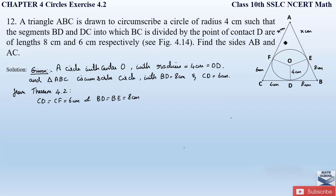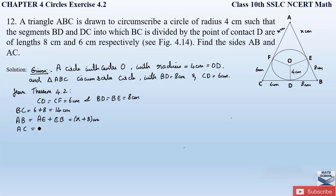Now let us find the three sides of the triangle. BC = CD + DB = 6 + 8 = 14 cm. AB = AE + EB = x + 8 cm. Similarly, AC = AF + FC = x + 6 cm. So we have found all three sides of the triangle.